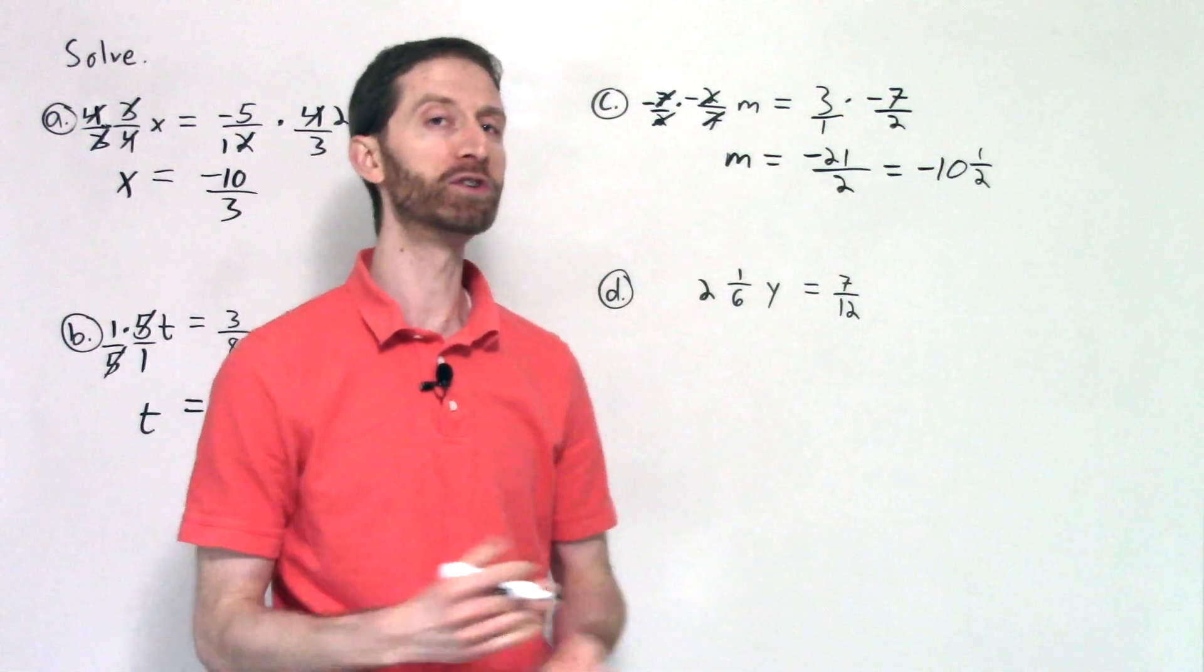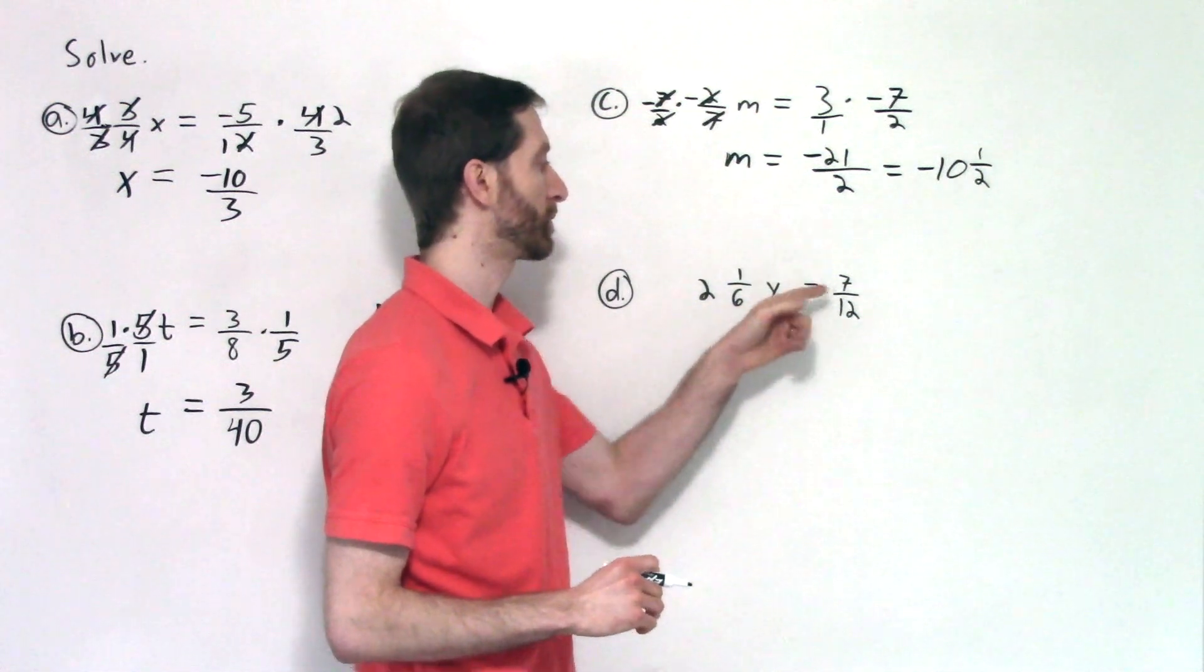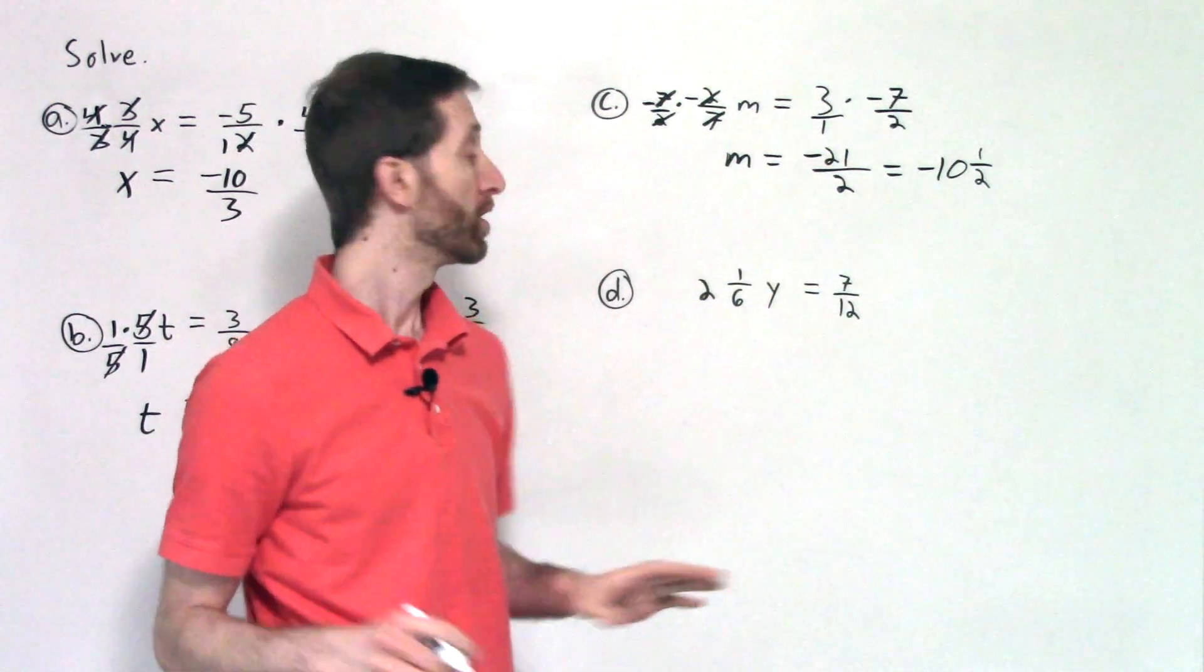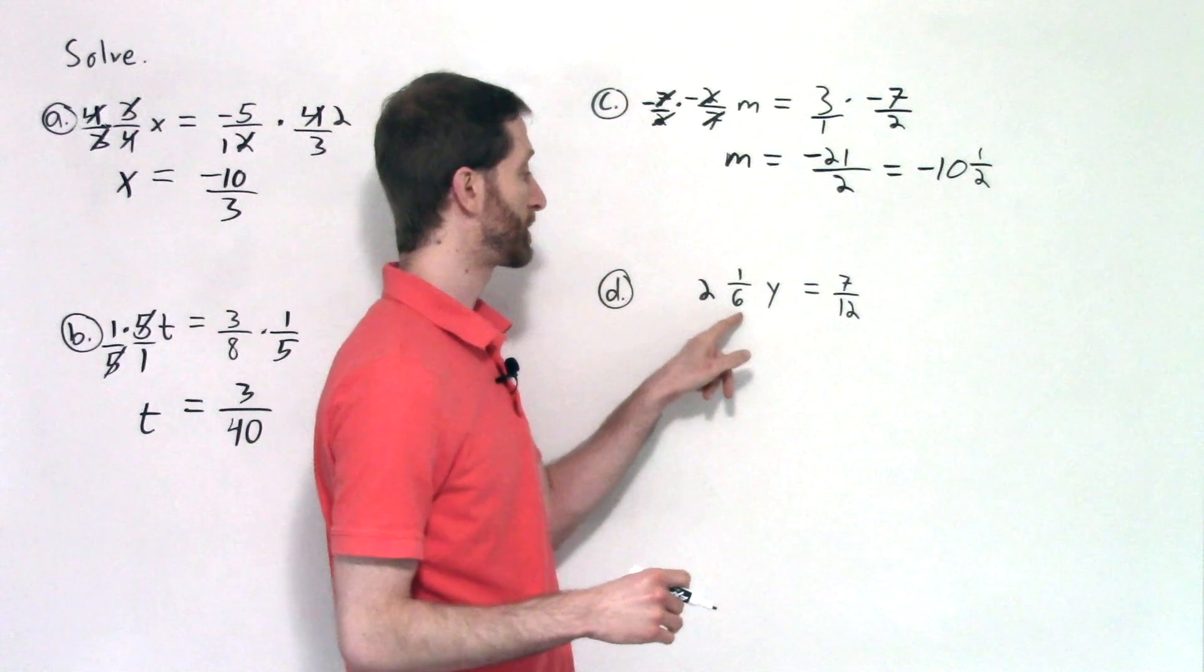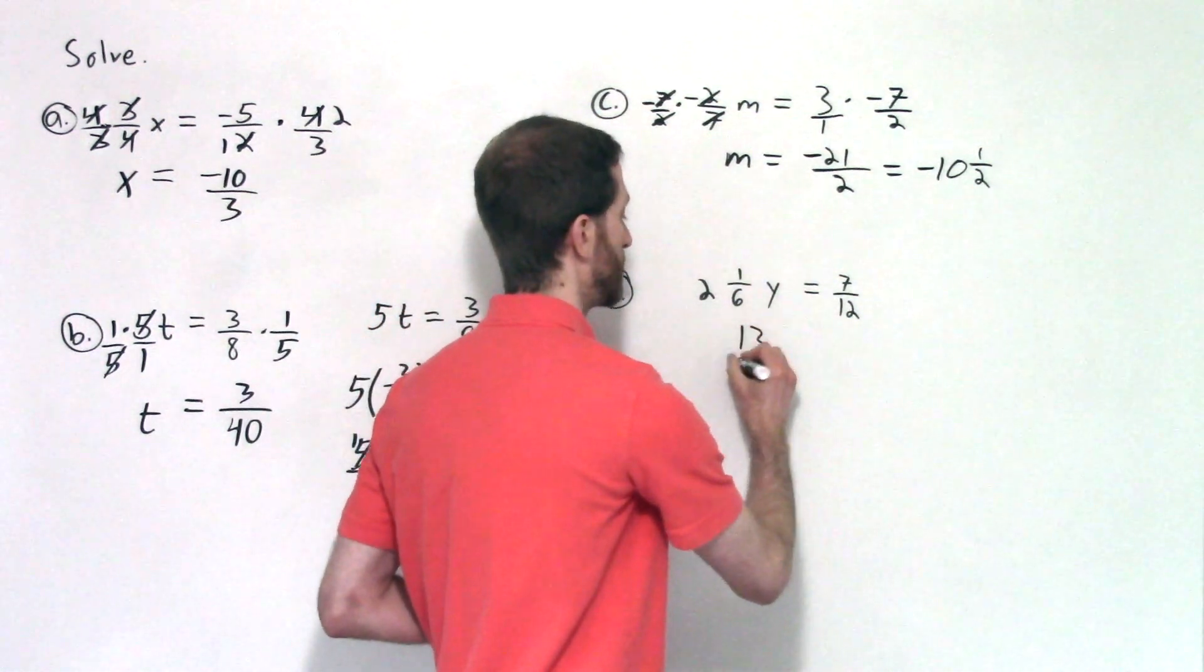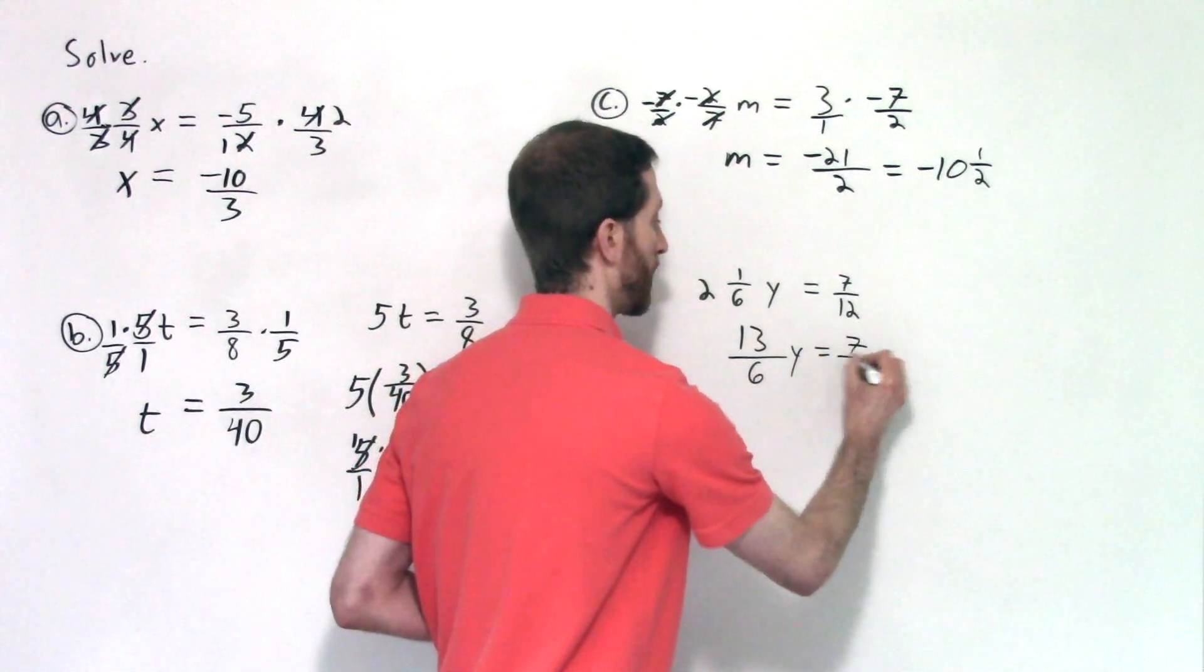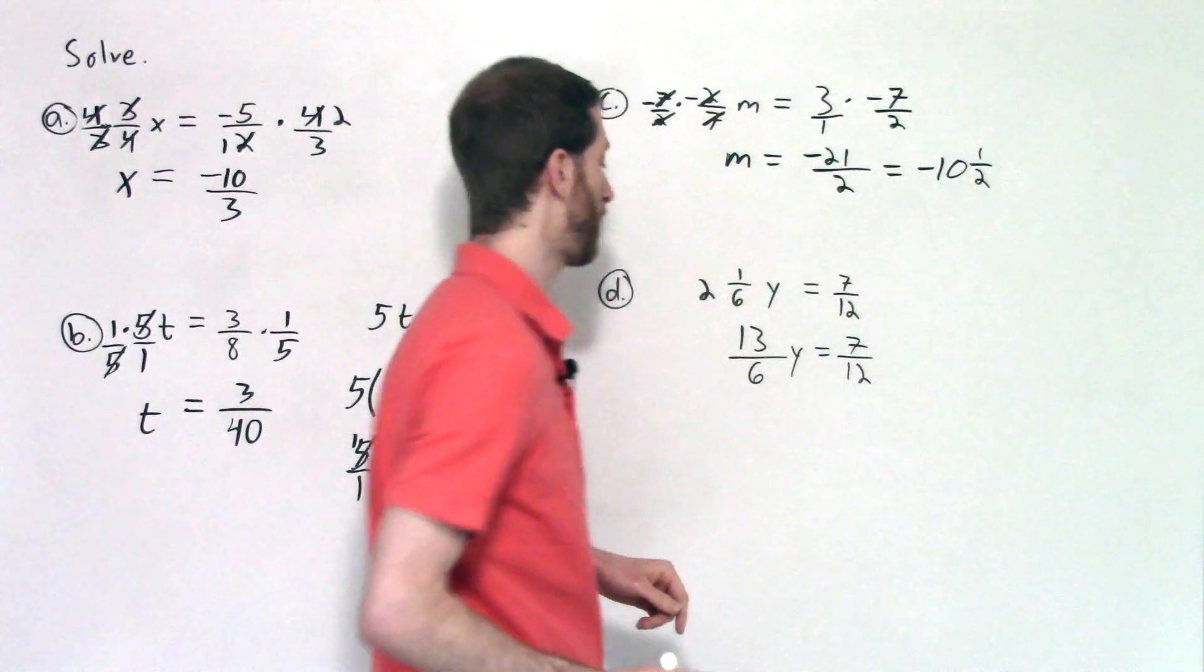So two and one sixth times y equals seven twelfths. Don't be scared. We're just going to convert this. Two times six is 12 plus one is 13. So I've got 13 over six y is equal to seven twelfths. All right. So from here, I need to undo 13 over six times y. So I'll multiply by the reciprocal.